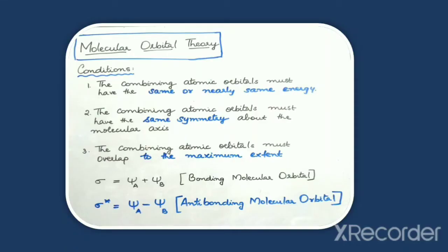Just like in an atom, electrons are present in atomic orbitals. In a molecule, the electrons are present in molecular orbitals. There are various conditions required for the formation of molecular orbitals. Let us see which are the various conditions.